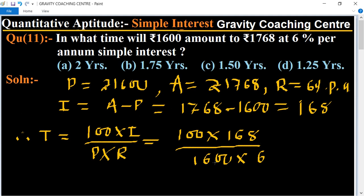So zeros cancel. Using the table of 6: 6×2 is 12, 3×6 is 18, 28 and 16. Table of 4: 7×4 is 28 and 4×4 is 16, equals 7 upon 4, means 1.75.